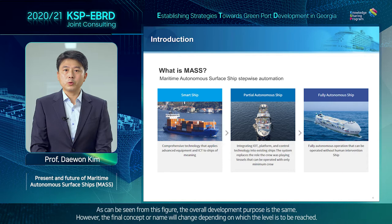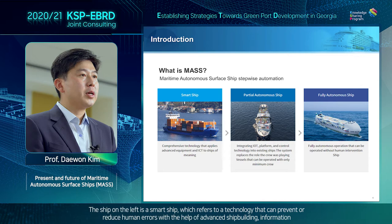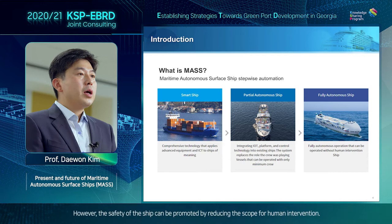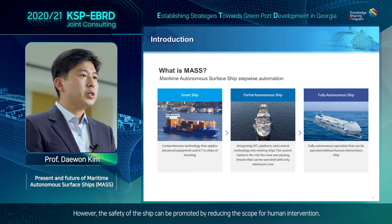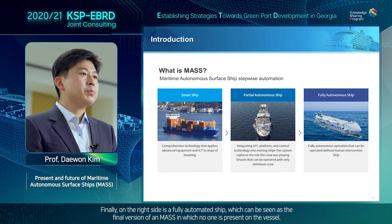As can be seen from this figure, the overall development purpose is the same. However, the final concept or name will change depending on which level is to be reached. The ship on the left is a smart ship, which refers to a technology that can prevent or reduce human errors with the help of advanced shipbuilding, information, and communication technologies in a situation where an existing person is on board. The middle is a partially automated vessel, still with people on board; however, the safety of the ship can be promoted by reducing the scope for human intervention. Finally, on the right side is a fully automated ship, which can be seen as the final version of a MASS, in which no one is present on the vessel.